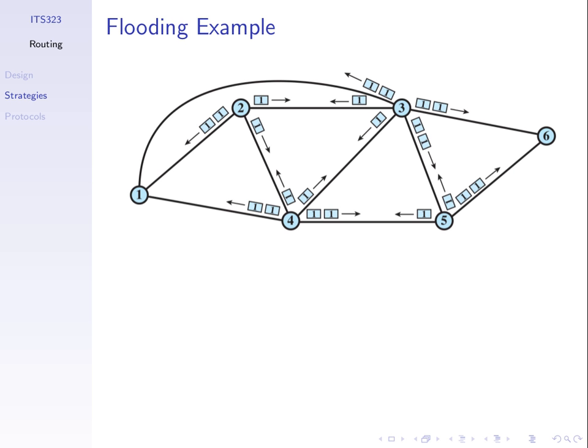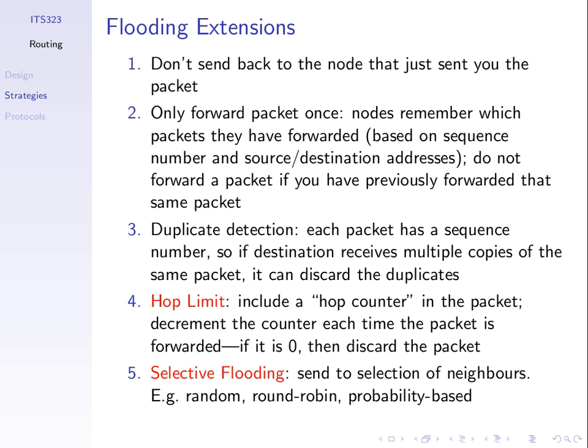That's why we stopped at thirty-four transmissions in the example - the hop limit of three prevented further sending. Another extension: when you receive a packet for the first time, send it to all your neighbors except who sent it. But if you receive that same packet again, don't send it again, because your neighbors have already received it. To do this, nodes remember the packets they have already sent using a sequence number. The header needs to contain a sequence number.